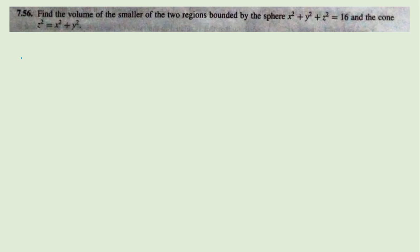Next is question 7.56, which says: evaluate the volume of the smaller of two regions bounded by a sphere and a cone. We must use the spherical coordinate system. The volume element in spherical coordinates is R² sin θ dR dθ dφ. You should know the scaling factors for spherical polar coordinates — if you do not know, I recommend going to the previous lecture first.